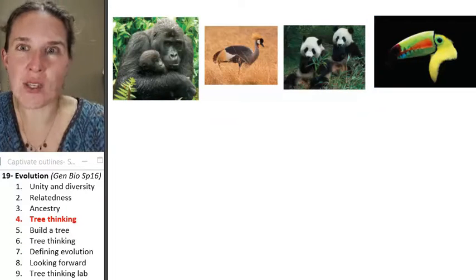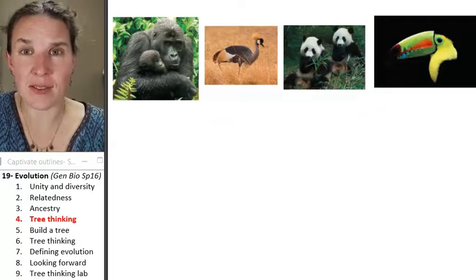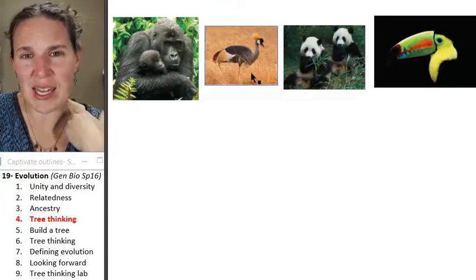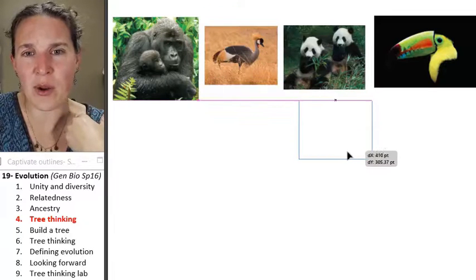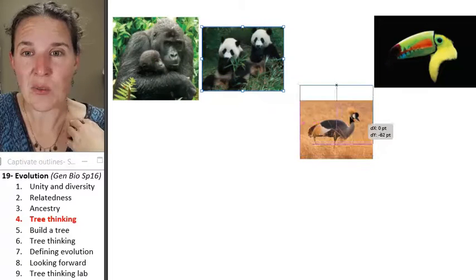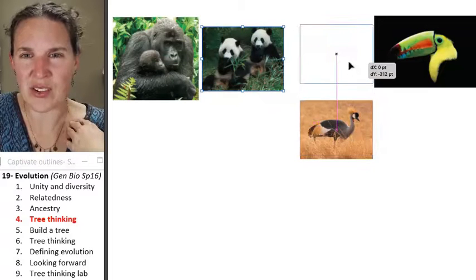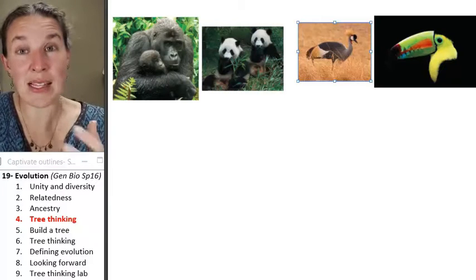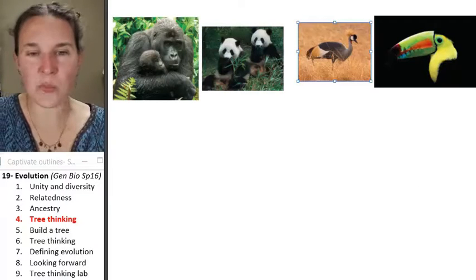So if I gave you this pile of critters and said, okay, sort them out, like who's related to who, you probably would be like, okay, yeah, we got to throw the mammals together and we got to throw the birds together. Do you agree with that? Like, we got to kind of sort them by similarity. And that, again, is super intuitive.